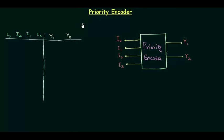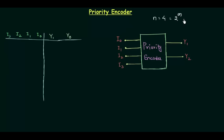In the last presentation we saw the basics of encoders and decoders, and we have to study four types of encoders, the first of which is the priority encoder. In this presentation we are going to complete the priority encoder. You can see a priority encoder on the right-hand side of your screen with four inputs i0, i1, i2, and i3, and two outputs y1 and y0, because n equals 4. We already know that to find the number of outputs we set 4 equal to 2 to the power m, so m equals 2.